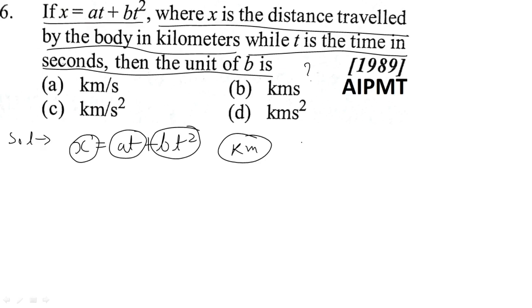If the question is asking about the unit of b, we have to equate bt squared with kilometers. Now, for time squared, the unit would be seconds squared. Therefore, the unit of b would be kilometers per second squared, which is option c.